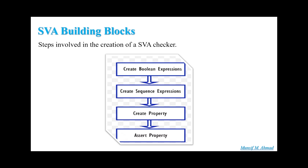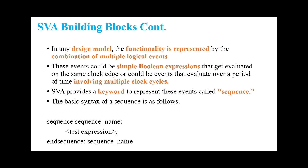What are the steps involved in the creation of an SVA SystemVerilog assertion checker? As you can see on the screen, there are four steps: creation of a boolean expression, creation of a sequence expression, creation of the property, and then asserting that property. We'll explore each one with theory and then a practical sample example with a sample waveform.